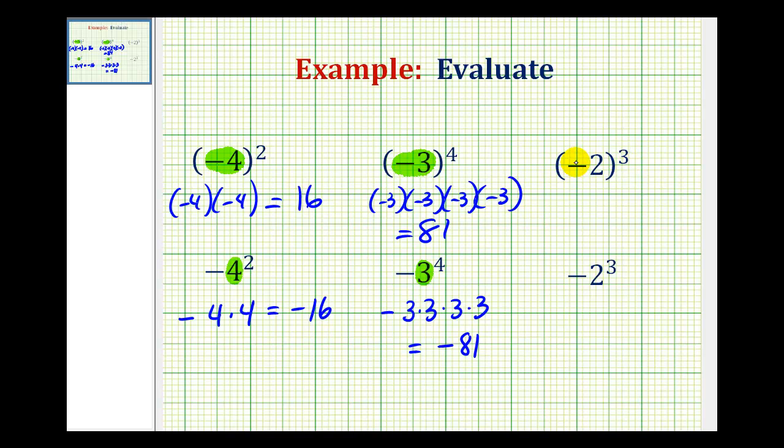Our first example here, the base is negative two because it's in parentheses. So we'll have three factors of negative two. Negative two times negative two times negative two. And we have an odd number of negatives, the product will be negative. So this is equal to negative eight.